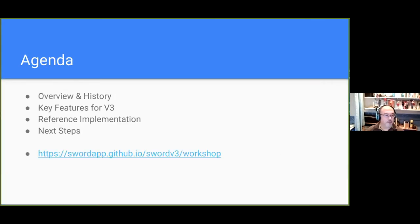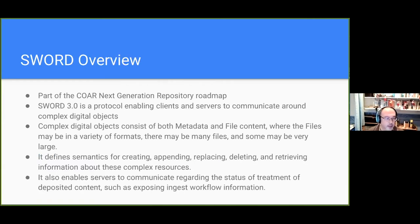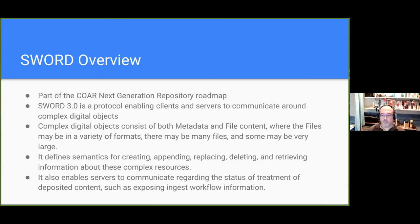We'll have an overview and history, then what's new in version three, talk about a reference implementation and where we are now with the project — there's a link to the website up there. A quick overview: the SWORD protocol first came out about 12 years ago and it's very much part of the institutional repository landscape.